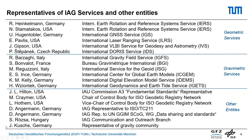This table shows the representatives of the IAG services. In the upper part, you see the geometric services; in the middle, the gravimetric services. The interactions between other entities is also ensured here by representatives of the International Astronomical Union, the International Standards Organization, and also UN-GGIM and the IAG communication and outreach branch.